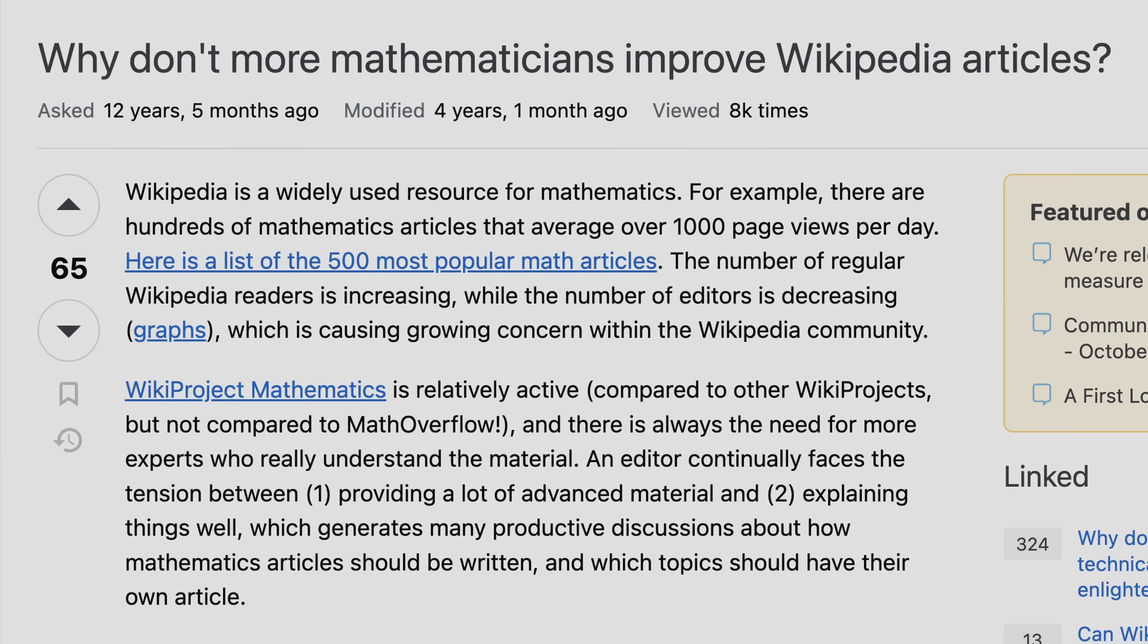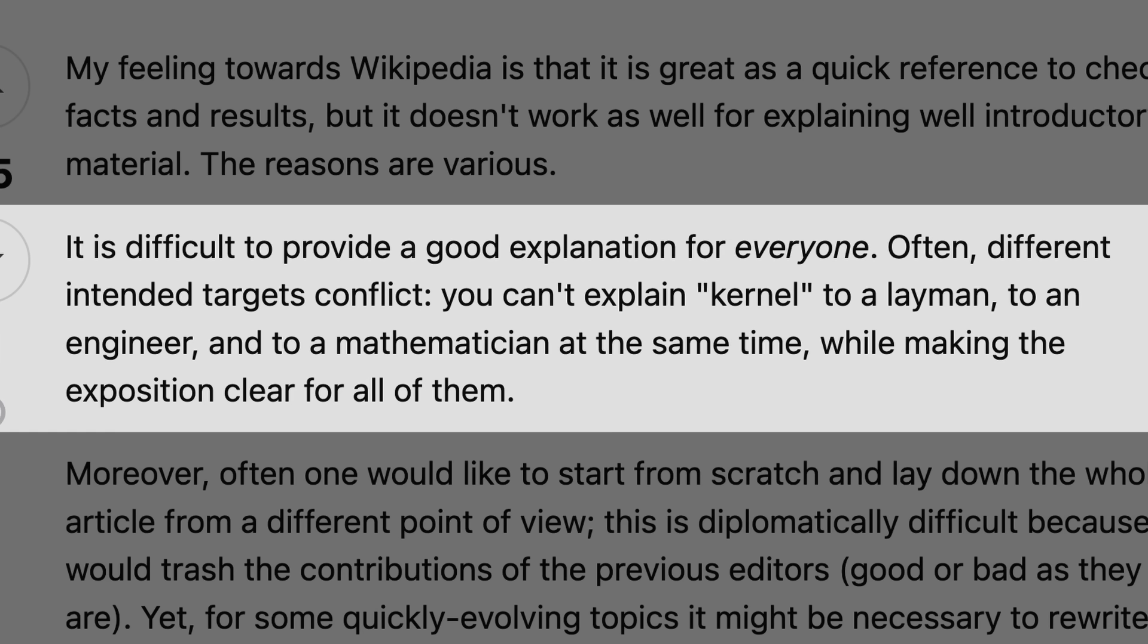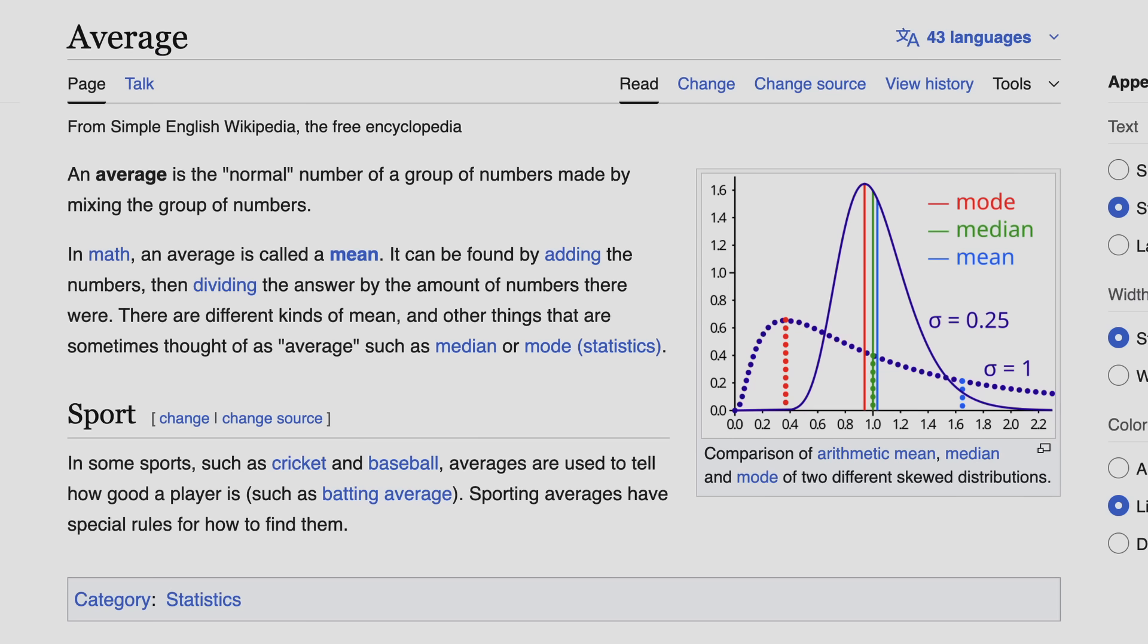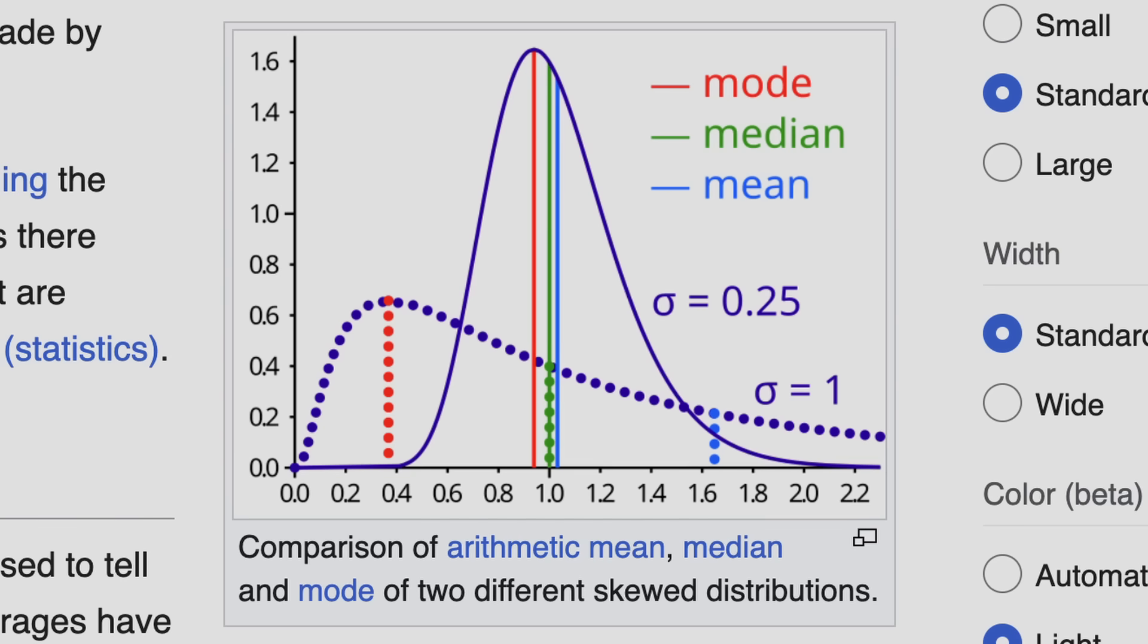Although some people speculate that there aren't enough mathematicians editing Wikipedia articles, other people recognize that it's hard to come up with a single explanation that appeals to all skill levels. Of course, if we want to find dumbed-down explanations of things like averages, we should look at the simple Wikipedia article, which contains no formulas or examples, but does contain this funny-looking O without any explanation of what it is or why it's relevant.